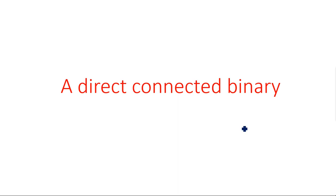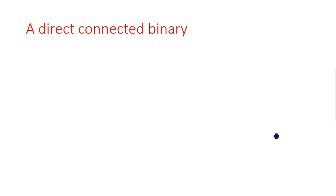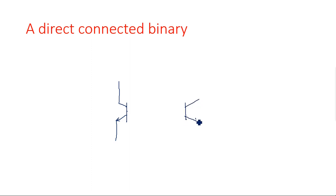In this video I am going to explain about a direct connected binary. A direct connected binary is nothing but there are no coupling elements involved between the two transistors. Previously I mentioned two different types of coupling mechanisms: collector coupling and emitter coupling. So far we have seen collector coupling. This video explains how a direct coupling works as a bistable multivibrator.